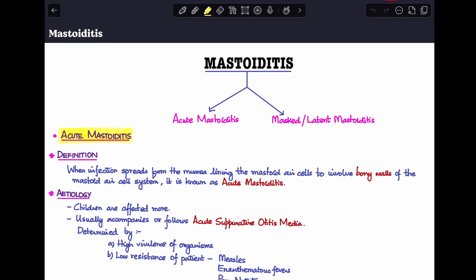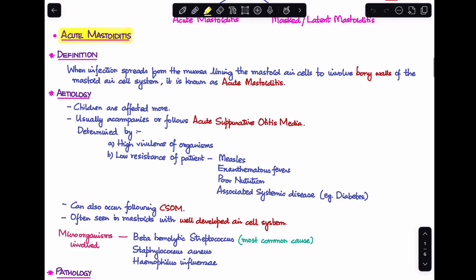Mastoiditis. There are two different types that we need to know about. One is acute mastoiditis and the second one is masked or latent mastoiditis. Let's first discuss acute mastoiditis.